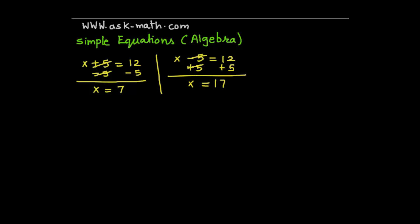From these two examples we conclude that whenever there is addition, we have to do subtraction, and whenever there is subtraction, we have to do addition. That means we have to use the opposite operations.